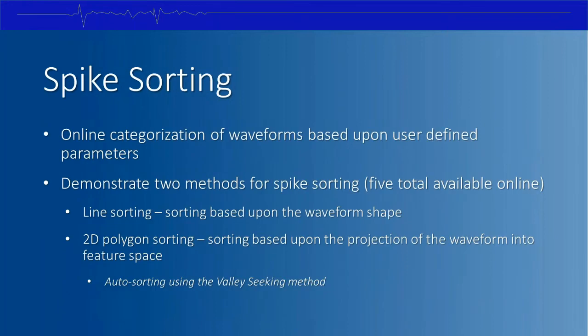Next we'll talk about spike sorting — the last topic. Spike sorting is the classification of waveforms, and it's possible to do this online with Omniplex. Online spike sorting is optional; it's always possible to do all sorting offline in Offline Sorter, or to change online sorting results offline. There are five different online spike sorting methods available in Omniplex. We'll highlight two: line sorting, based on waveform shape; and 2D polygon sorting, based on waveform projection into feature space.